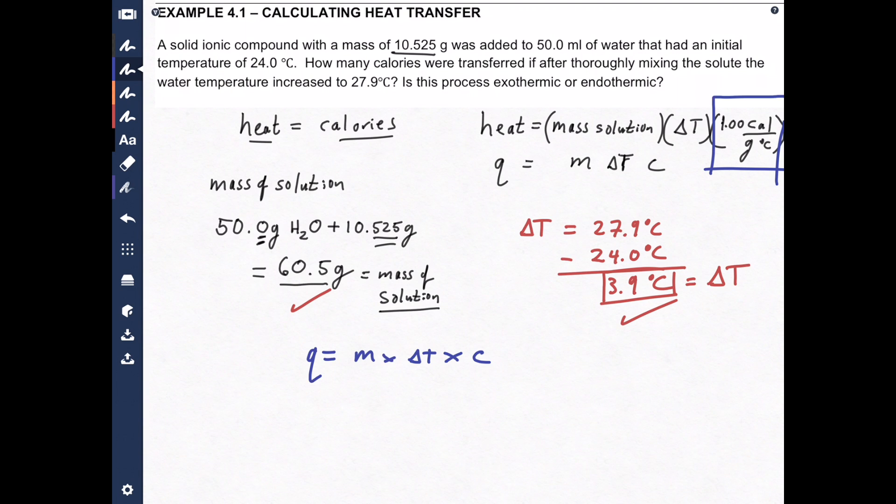Mass is 60.5 grams, multiplied by 3.9 degrees Celsius, we got that from here, multiplied by the heat capacity of water, which is 1.00 calories per gram degrees Celsius. Watch the units cancel.